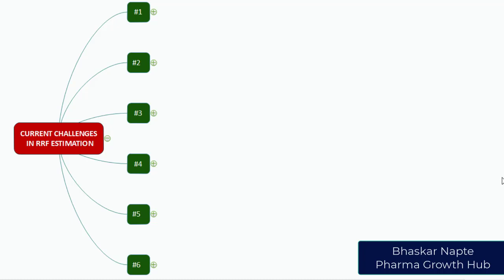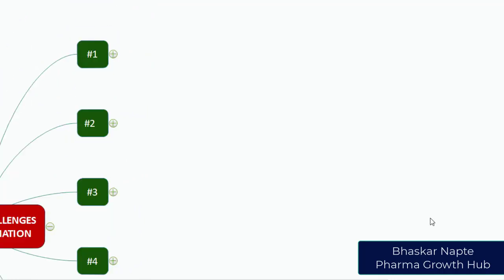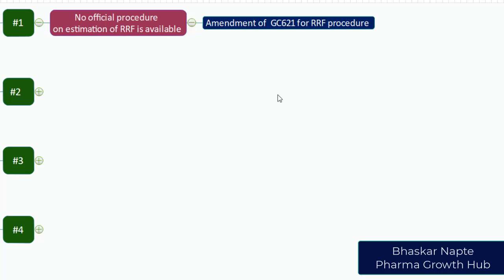These are the six challenges we are going to discuss. Challenge number one: no official procedure on estimation of RRF is available. Though we talk about the establishment of RRF, there is no officially declared procedure available for it. What is proposed is that the general chapter 621 on chromatography can be amended to include the relative response factor estimation procedure.